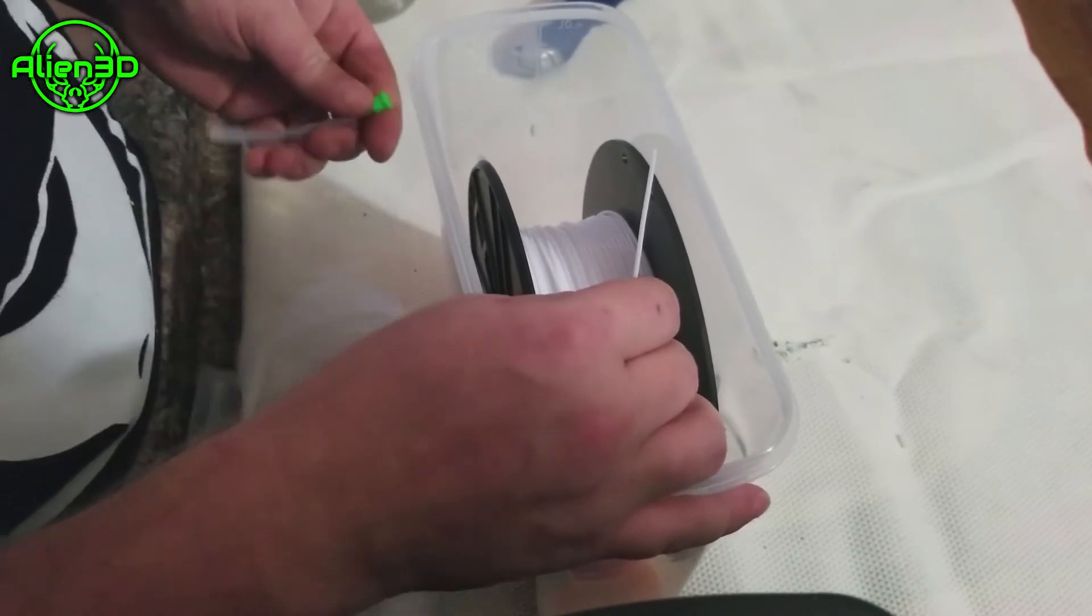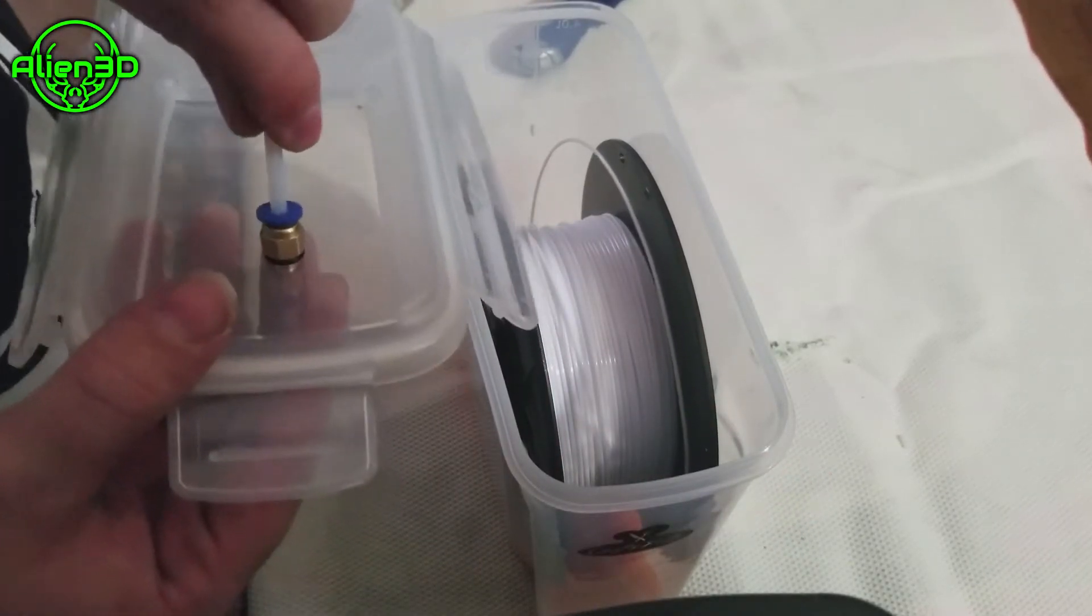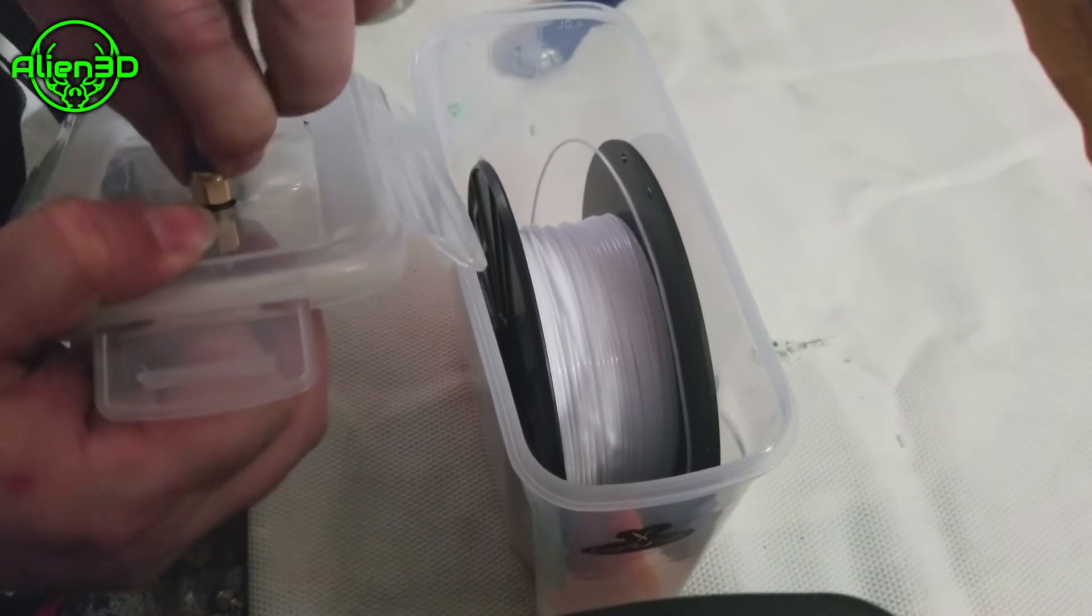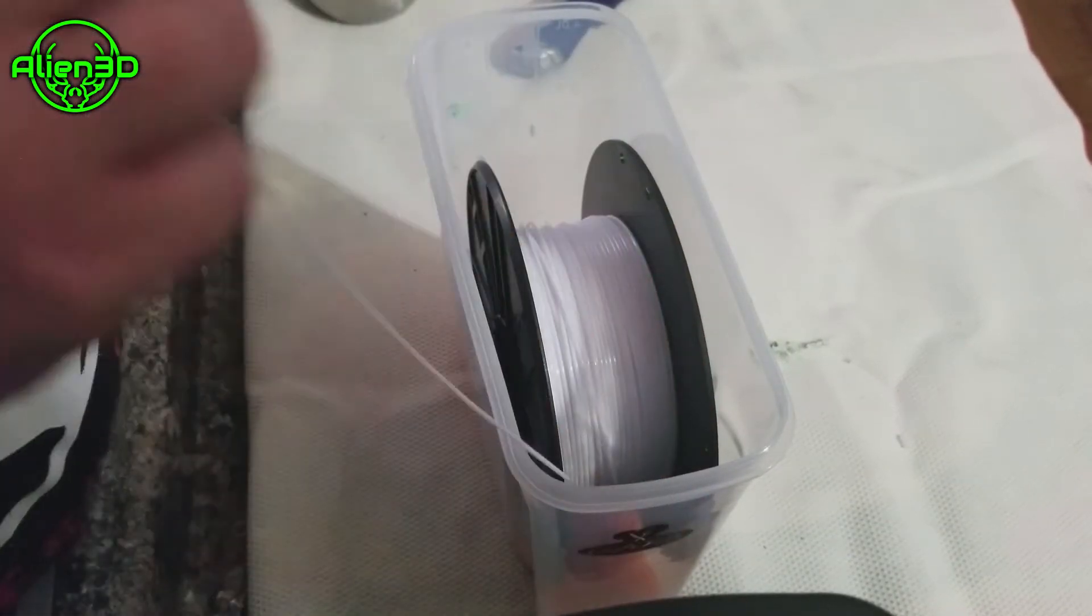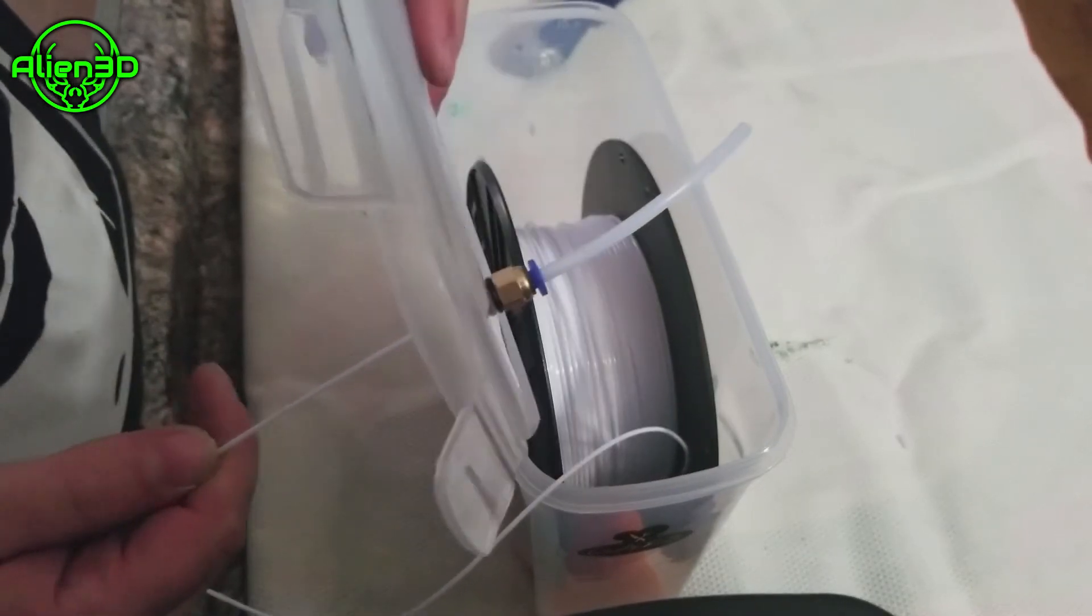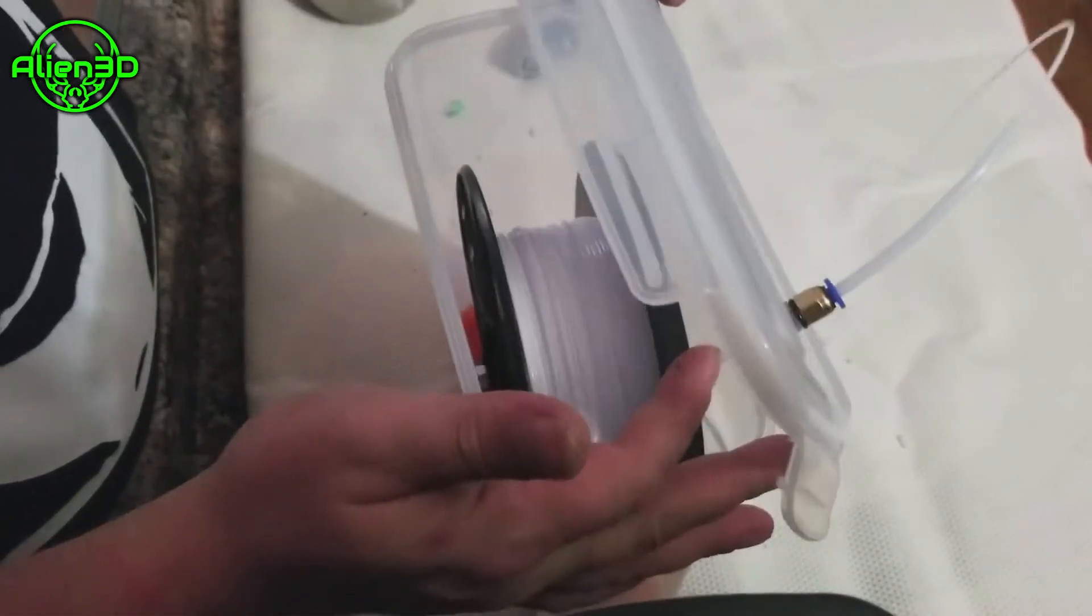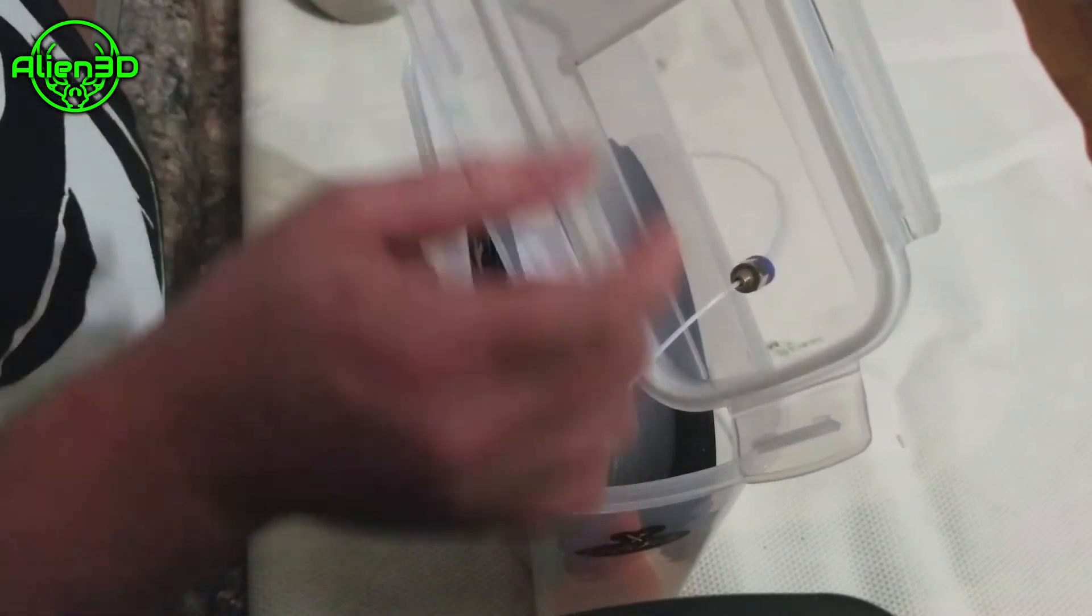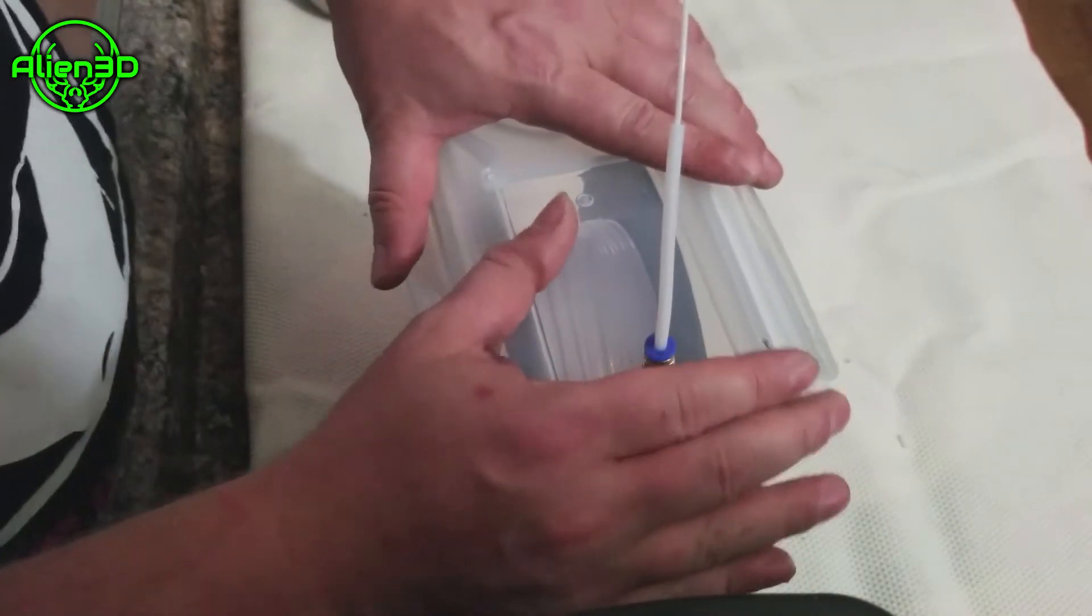We're going to wind this back up and feed it through the tube. See, that's why you need a pressure clip - this tube comes out if you don't have one. This is supposed to pressurize when you push it down and pull it up. We're going to get the filament and run it through the tube.